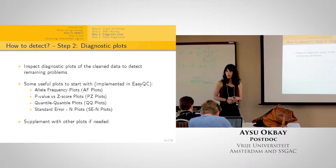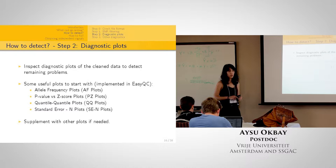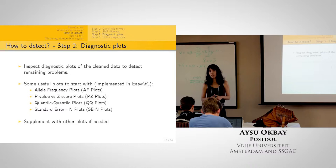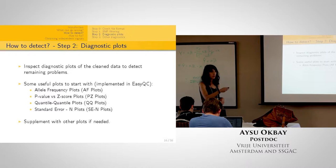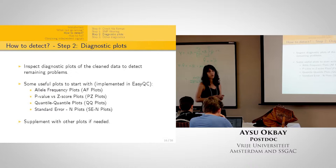After SNP filtering, there could still be problems remaining. To understand what's wrong in the remaining data, you inspect diagnostic plots. Some useful plots — all implemented in EasyQC — are: allele frequency plots, p-value versus Z-score plots, QQ plots, and standard error versus sample size plots. You can also supplement these with other plots indicative of problems.